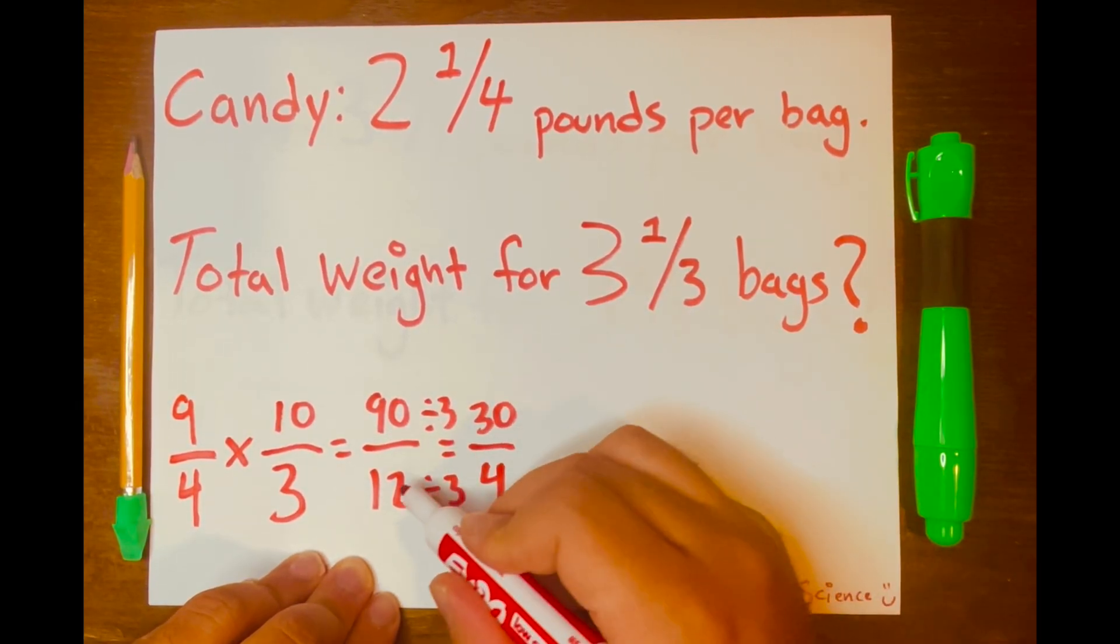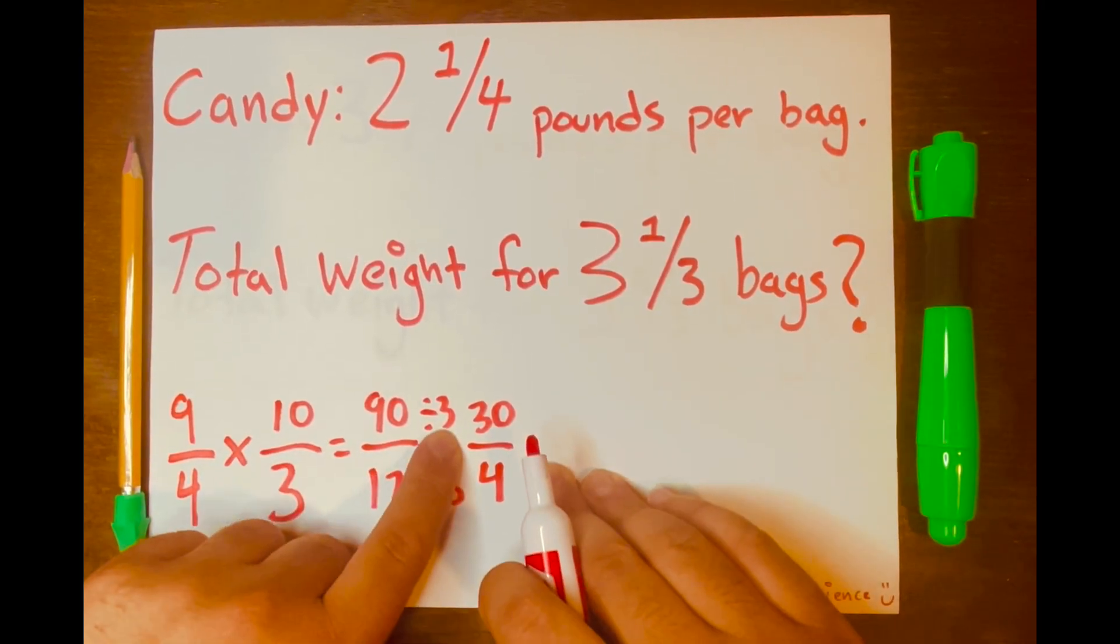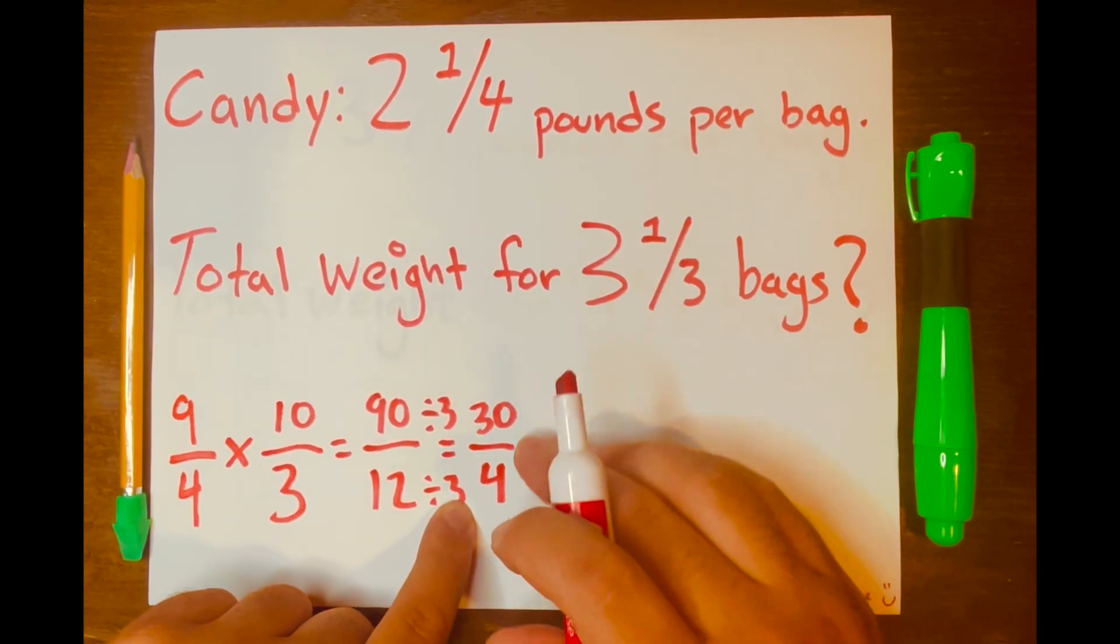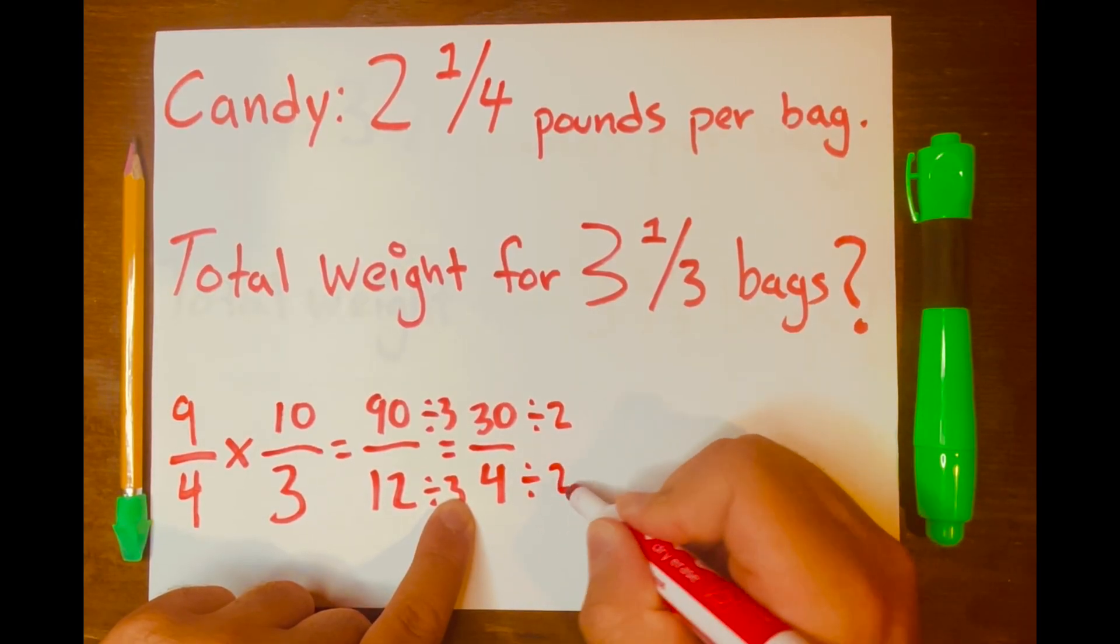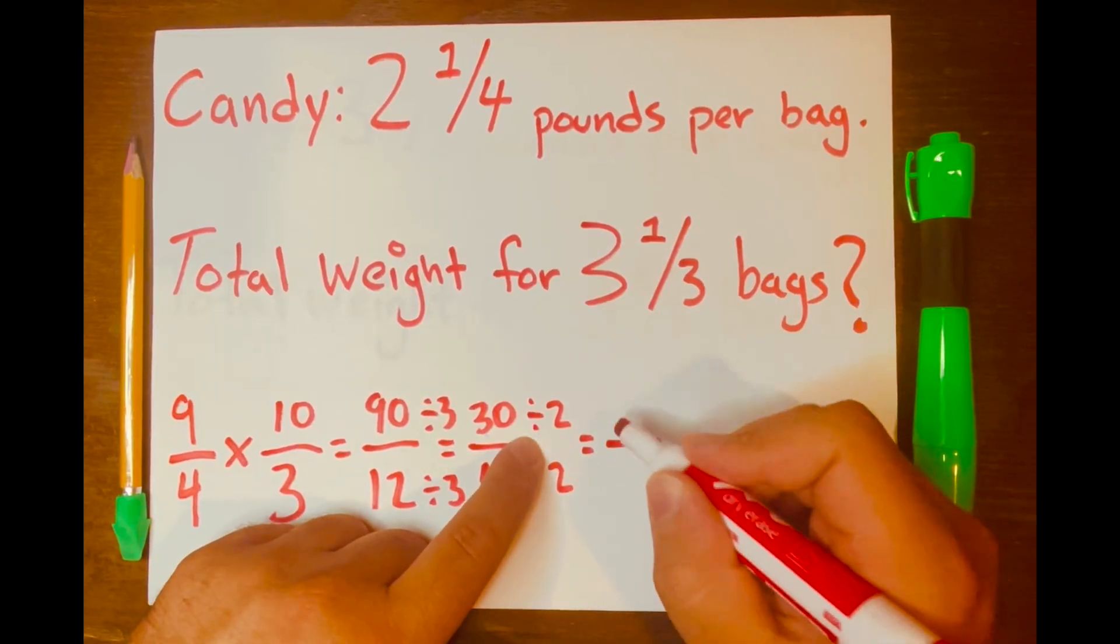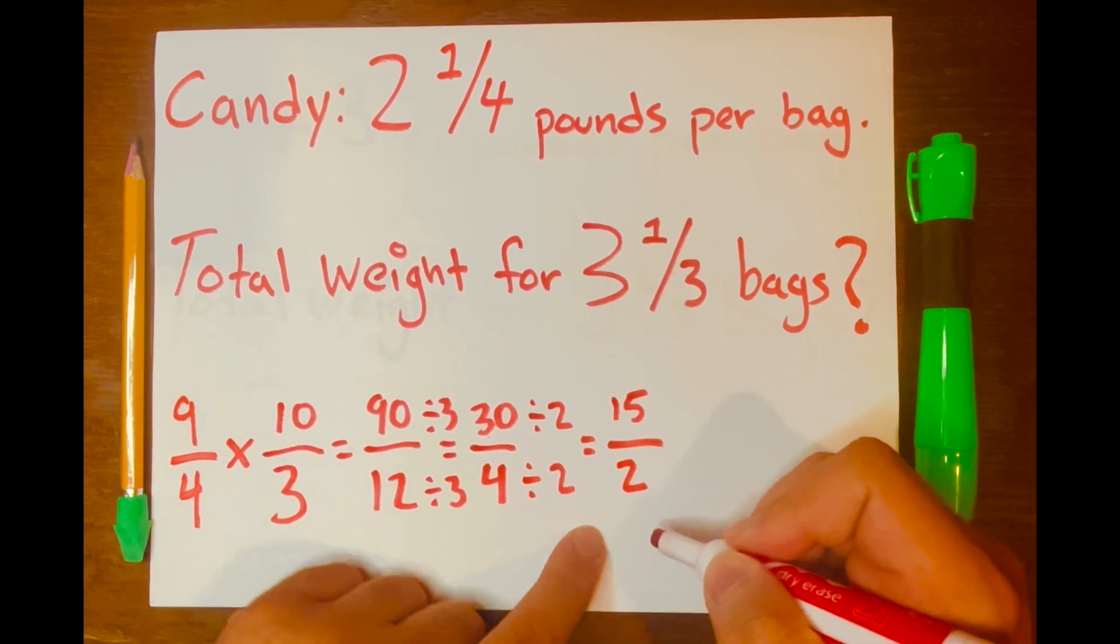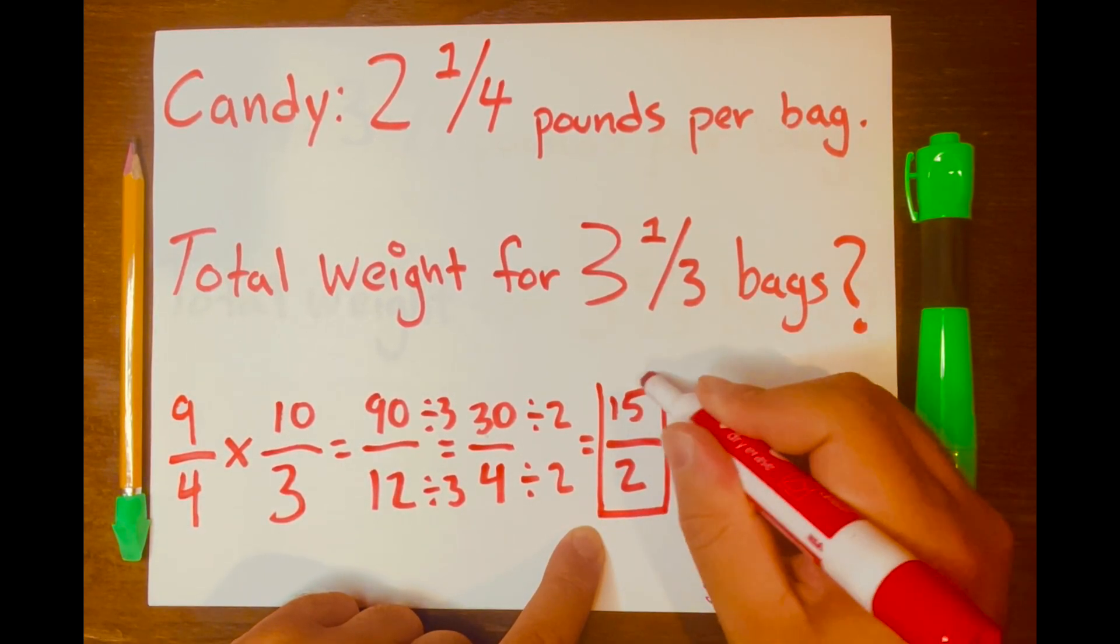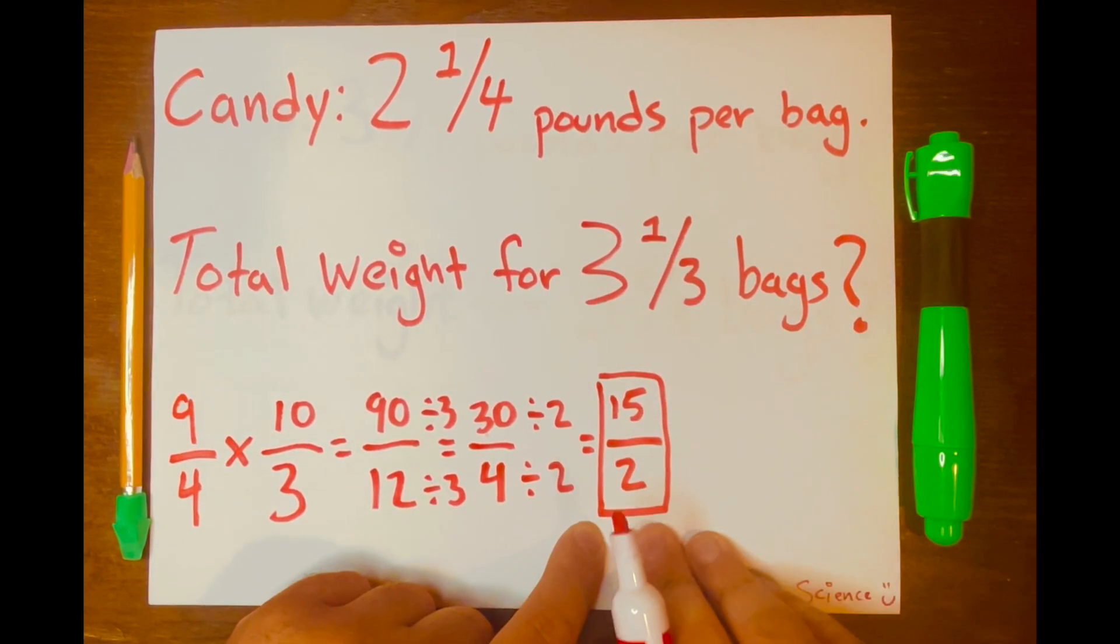90 divided by three is 30. 12 divided by three is four. And then we have a fractional answer of 30 over four. And that can also be reduced or simplified further. And 30 divided by two, and four divided by two. So 30 divided by two is 15. 4 divided by two is two. And now we have 15 over two. That is your answer in an improper fraction.